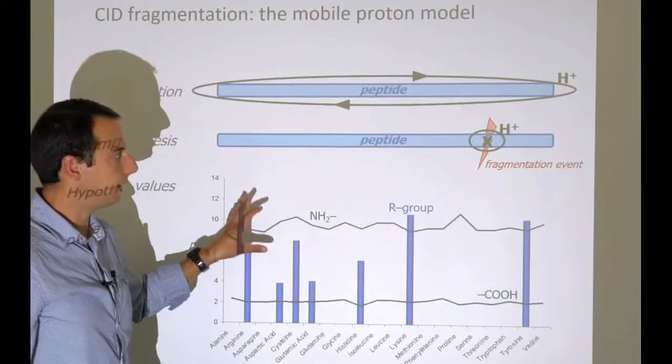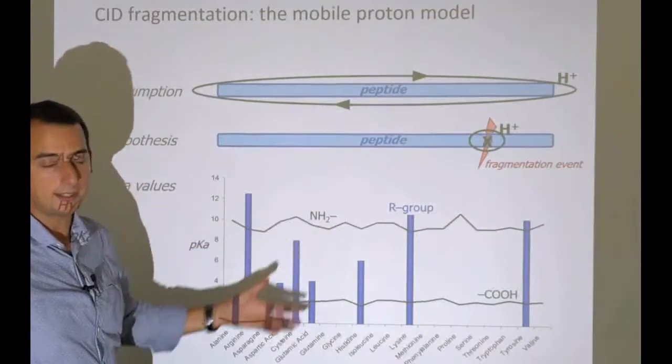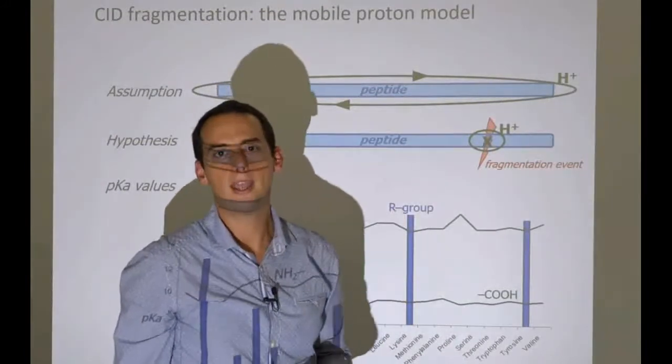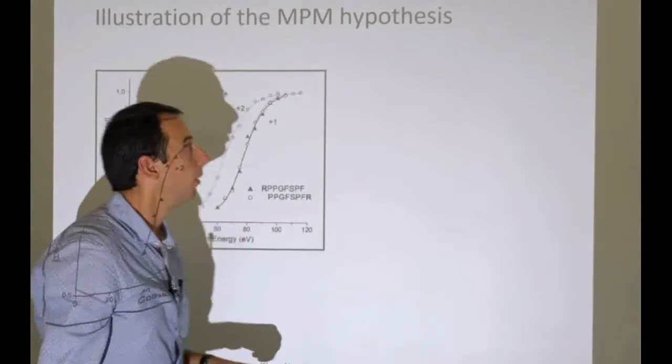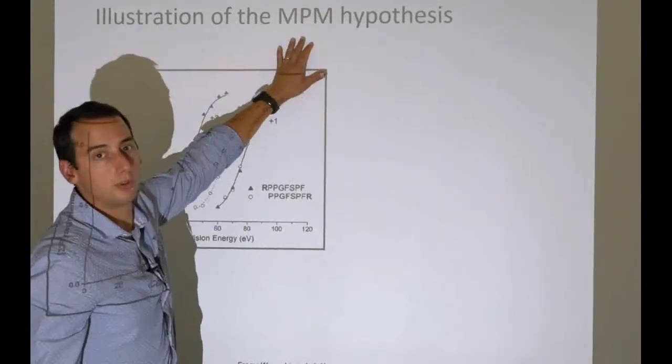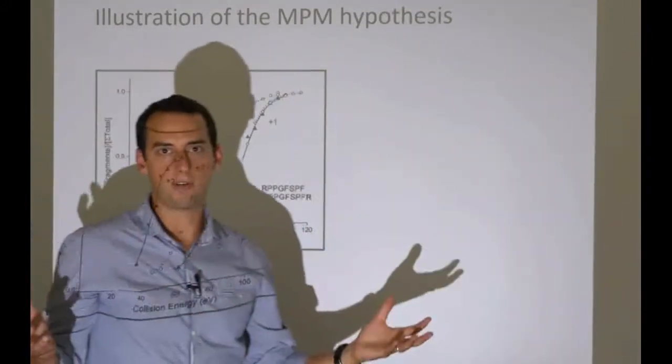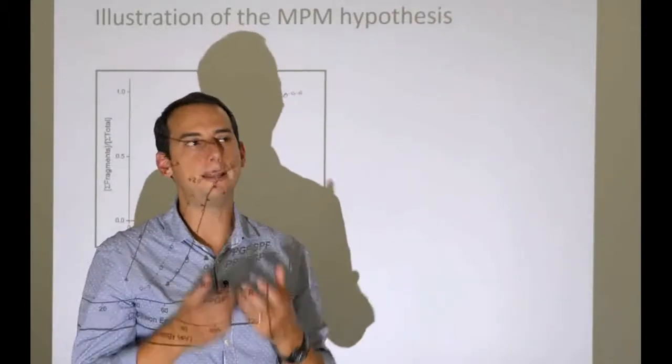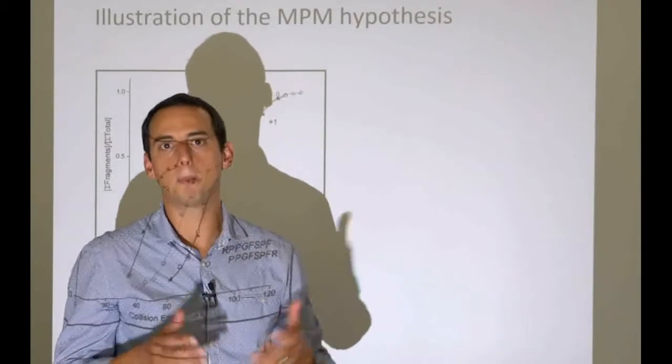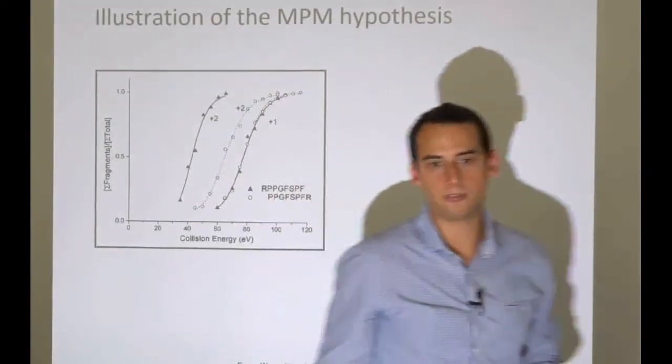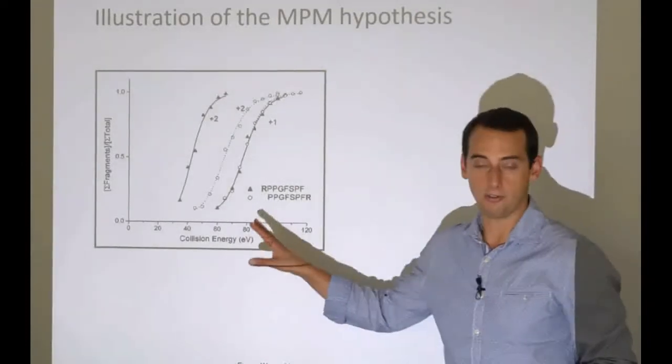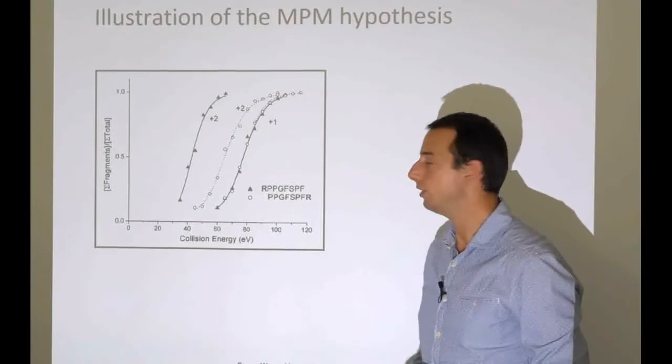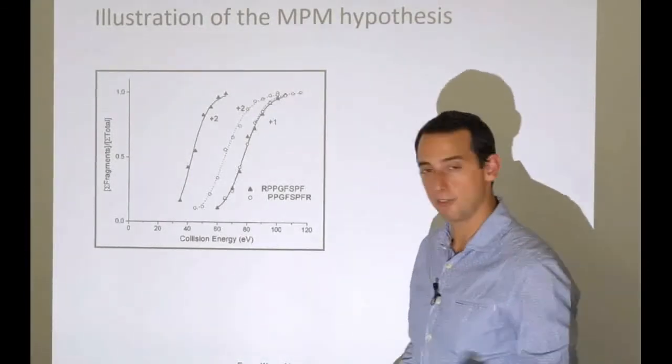With all this in mind, let's see whether we can apply our knowledge about the basicity of these different locations. With the hypothesis of where the proton is, that's where things will break, and see if this hypothesis holds. This hypothesis is called the mobile proton model. We're assuming that the key factor is the proton is mobile and can travel around. This theory was proven by a series of very elegant papers by Wysocki et al.